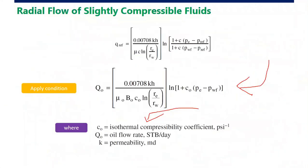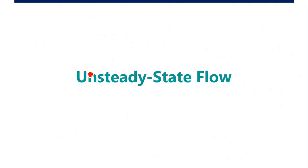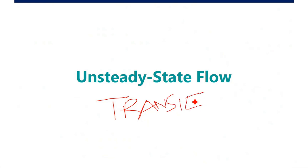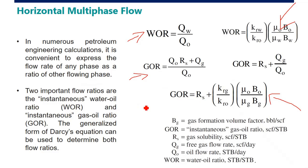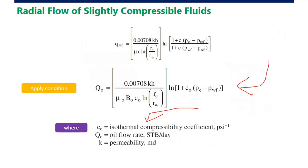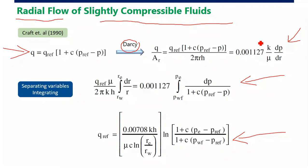We continue with transient flow. Previously, you did not see any symbol T, because we had steady-state — no function of pressure — because the pressure is constant.